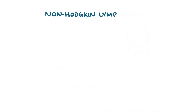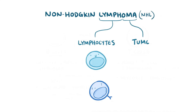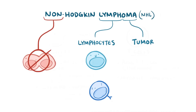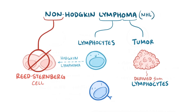The term non-Hodgkin lymphoma, sometimes called NHL, can be broken down. Lymph refers to lymphocytes, and oma refers to a tumor. Non-Hodgkin refers to the absence of a key cell seen in Hodgkin lymphoma, the Reed-Sternberg cell. So non-Hodgkin lymphoma is a tumor derived from lymphocytes, specifically B cells and T cells, which mainly live in the lymph nodes and move through the blood and lymphatic system.